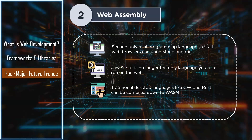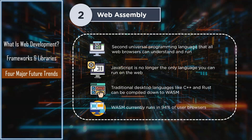If a language has a Web Assembly compiler, even traditional desktop languages like C++ and Rust can be compiled down to WASM with relative ease. WASM currently runs in 94% of users' browsers, with IE, UC Browser, and Opera Mini support being the main things holding it back. However, it's backed by developers from Mozilla, Microsoft, Google, and Apple, and support in modern browsers is fast moving.